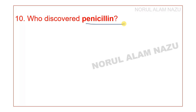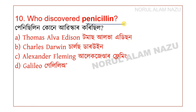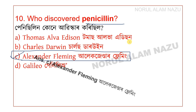Question number 10: Who discovered penicillin? The answer is Alexander Fleming, the famous scientist who discovered penicillin.